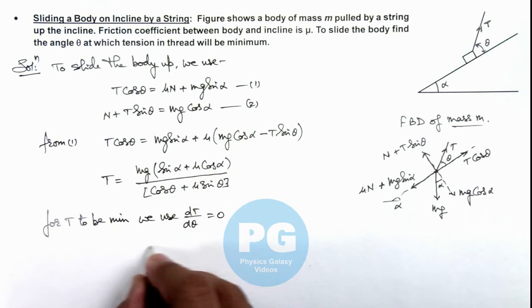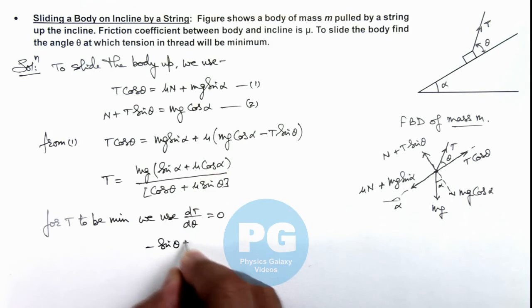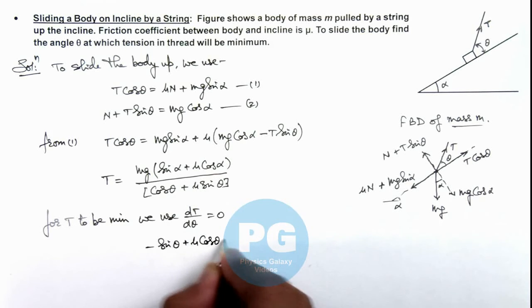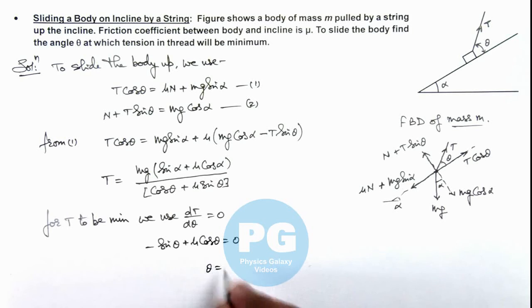Which is minus sin θ plus μ cos θ is equal to zero. On further simplifying we are getting tan θ is μ, so θ will be tan inverse of μ. That will be the final answer for this problem.